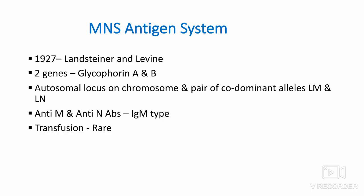MNS antigen system: This system was first described by Landsteiner and Levine in 1927. It is based on two genes, glycophorin A and glycophorin B. This blood group is under the control of an autosomal locus on chromosome 4 and also under the control of a pair of co-dominant alleles Lm and Ln. Anti-M and anti-N antibodies are usually IgM types, and the system is rarely associated with transfusion reactions.